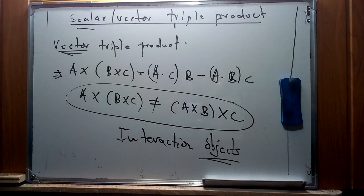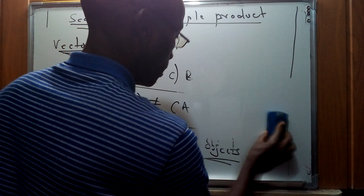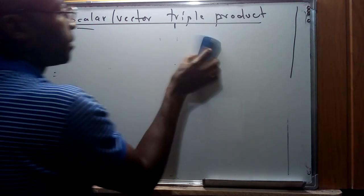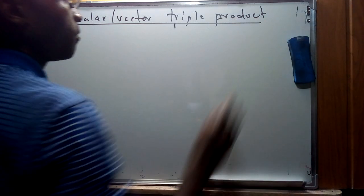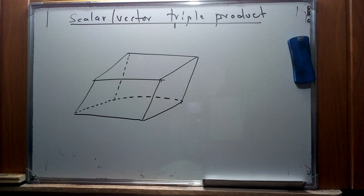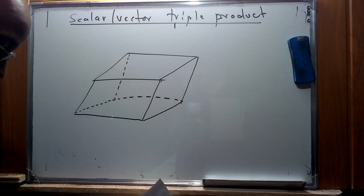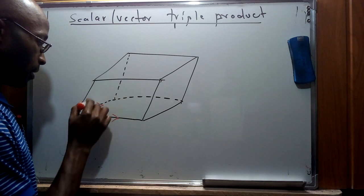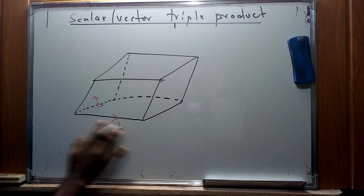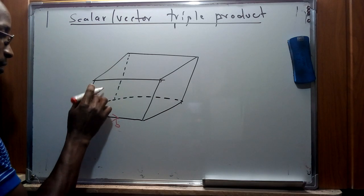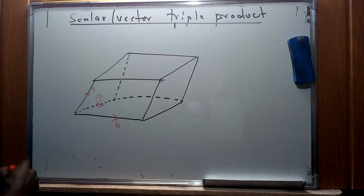I'm going to use a sample question to illustrate how we can apply the concept of the scalar triple product in finding the volume of a parallelepiped. It's useful for us to show what a parallelepiped actually looks like — it's a three-dimensional figure formed by six parallelograms. I'm going to draw a parallelepiped on the board.